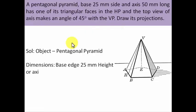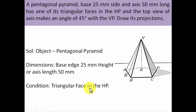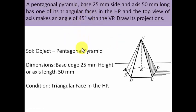Let's write down all the conditions given to us. Condition one: triangular face in the HP. Apart from this, we need to ensure that the angle made by the top view of the axis with the vertical plane is represented by beta, and beta for the top view of the axis is given as 45 degrees. That was all about extracting data from the problem.